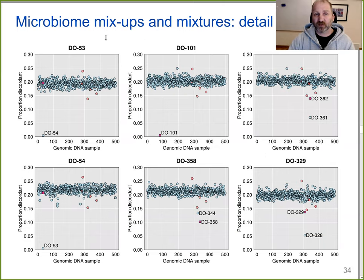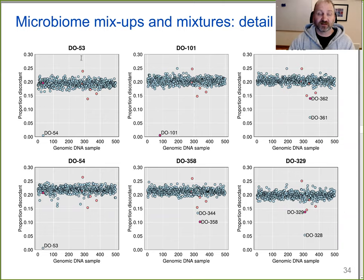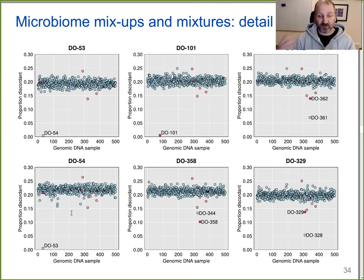Looking at microbiome mixtures and mix-ups in more detail: microbiome sample 53 is closest to DNA sample 54, not really close to anyone else — a simple label swap between 53 and 54 in either the microbiome or genomic DNA data. DO 101 is the microbiome sample closest to itself and not really close to anyone else — a perfectly fine sample. DO 358 is closest to itself but not particularly close, and also kind of close to another sample DO 344, suggesting DO 358's microbiome may be a mixture of DNA from both mice.